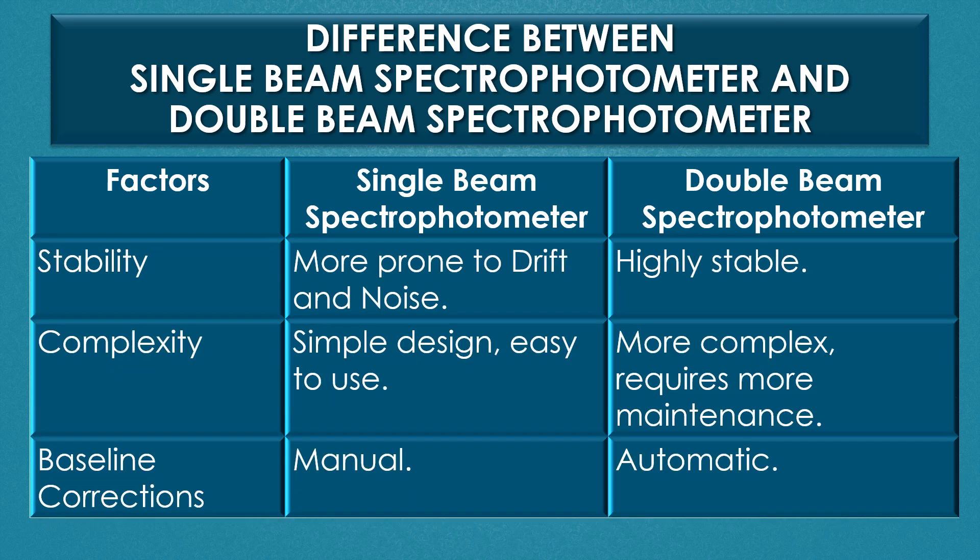Stability: a single beam spectrophotometer is more prone to drift and noise, and the double beam spectrophotometer is highly stable. Regarding complexity, a single beam spectrophotometer has a simple design and it is easy to use, but the double beam spectrophotometer is more complex and requires more maintenance.